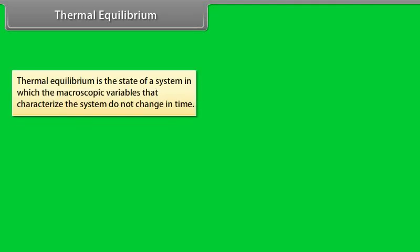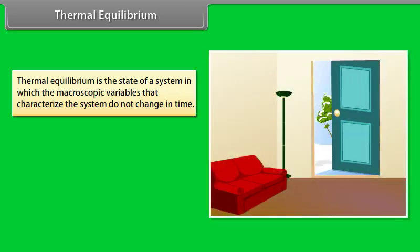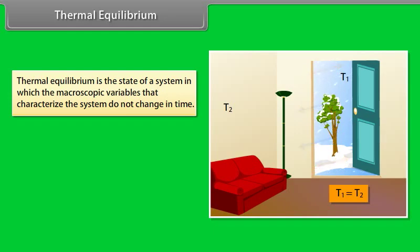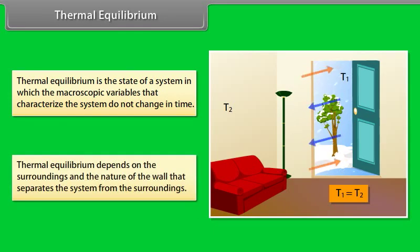Thermal equilibrium is the state of a system in which the macroscopic variables that characterize the system do not change in time. For example, in winter season, when you open the door of your house, heat moves out. After a few minutes, the temperature inside and outside the house becomes the same. This is due to thermal equilibrium. Thermal equilibrium depends on the surroundings and the nature of the wall separating the system from the surroundings.